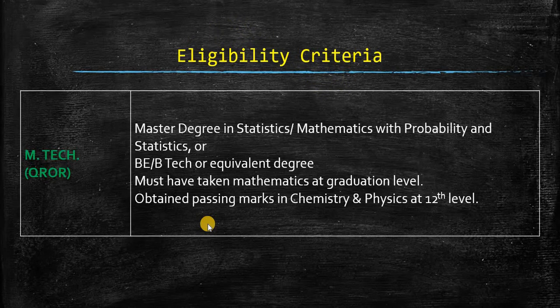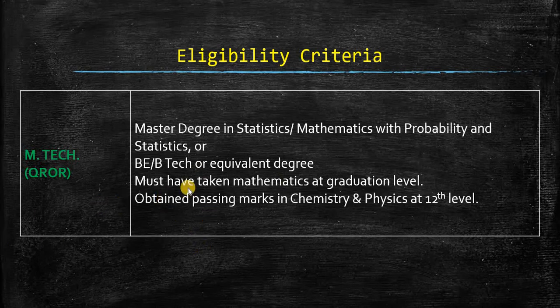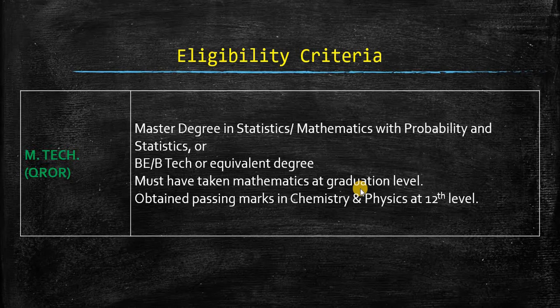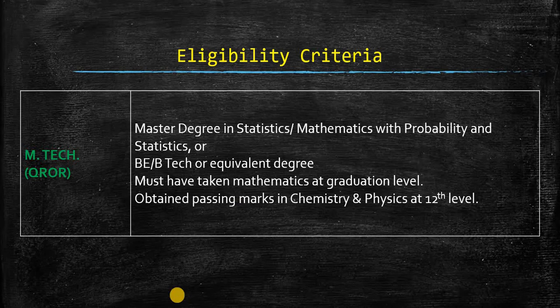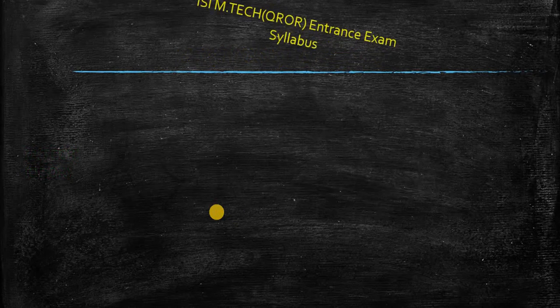The eligibility criteria: you need to have a master's degree in statistics, mathematics and probability, or you can have a B.E. or B.Tech or equivalent degree. There must be mathematics at the graduation level. You do not need to have maths honours; it can be a general course as well. If you do not have a major, it will still be counted as a subject. If you have chemistry and physics, there should be a passing mark obviously.